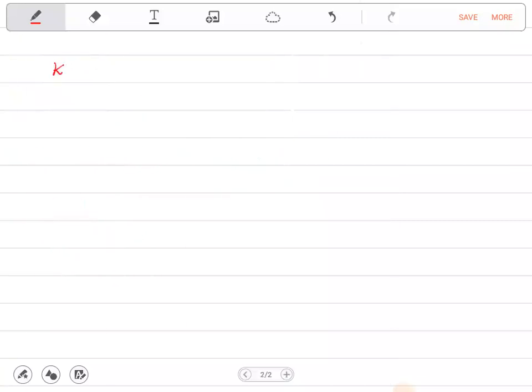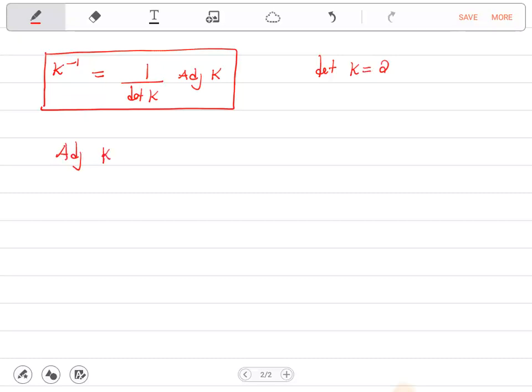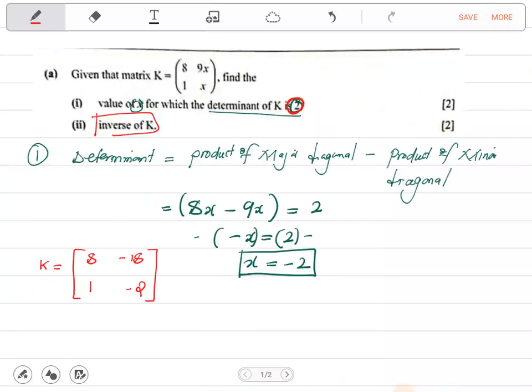So K-inverse, alright, is just equal to 1 over determinant of K multiplied by the adjoint of K. It's the formula for inverse. Now what is the determinant? Determinant of K has been given to be 2. What of the adjoint? Let's first find the adjoint of K.